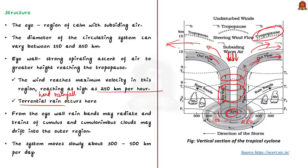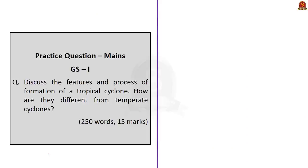The diameter of the circulating cyclone system can vary between 150 and 250 kilometers. According to meteorologists, the diameter of storms over the Bay of Bengal, Arabian Sea, and Indian Ocean is between 600 to 1200 kilometers, and the cyclone system can move about 300 to 500 kilometers per day, creating strong surges and inundating coastal lowlands. This is why tropical cyclones are among the most devastating natural calamities.